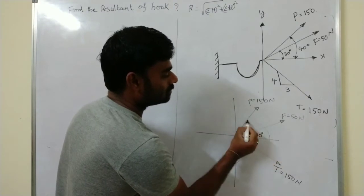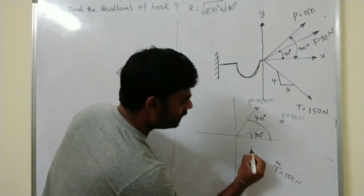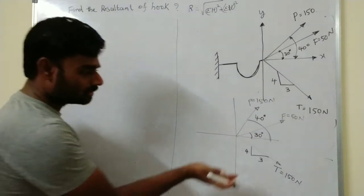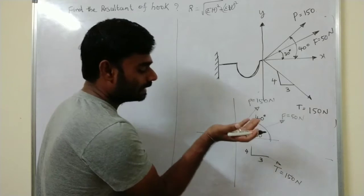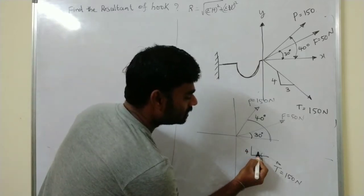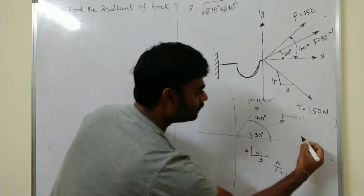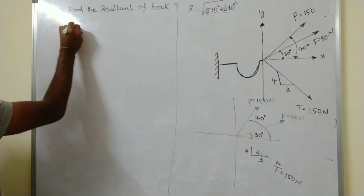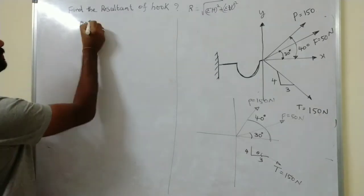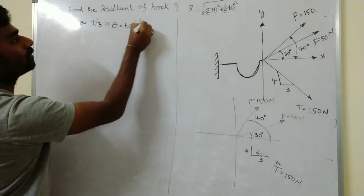The next force makes 40 degrees with the horizontal. The third force has a slope ratio of four and three, so the inclination angle is not directly given. To calculate theta, we use tan θ = opposite/adjacent = 4/3, therefore θ = tan⁻¹(4/3).